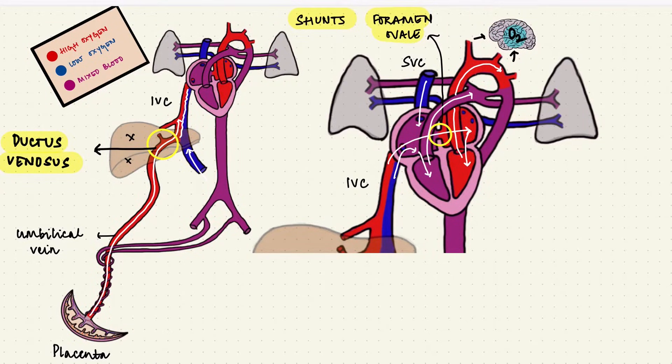Distal to the origin of the left subclavian artery is shunt III, the ductus arteriosus. It's a connection between the pulmonary artery and the aorta. So blood from the pulmonary artery goes through the ductus arteriosus to the aorta. Thanks to this shunt, only around 12% of blood that comes out of the right ventricle reaches the lungs. The rest goes through the ductus arteriosus to the aorta. From the aorta, blood gets supplied to the rest of the systems. It passes through the umbilical arteries back to the placenta for oxygenation.